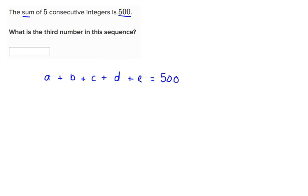I chose to use variables because we don't know what any of these numbers are. Now it's asking for specifically the third number in the sequence, which happens to be this one right here. This is the first number, the second, the third, which is the one we're looking for, the fourth, and the fifth.